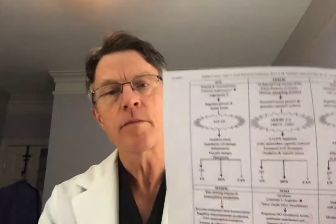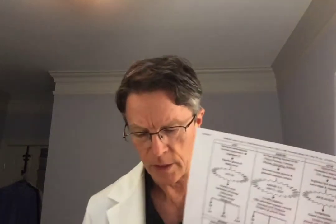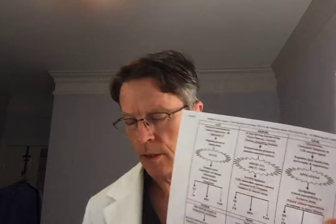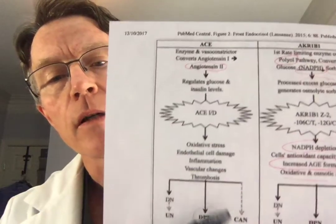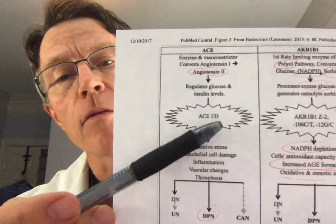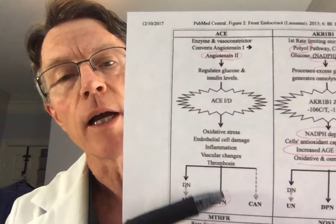The real issue here is questions about genetics and diabetic neuropathies. I found a really good visual on this. The first one has to do with ACE inhibitors — different pathways associated with diabetic neuropathy.